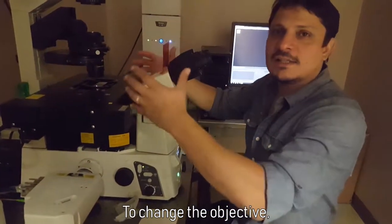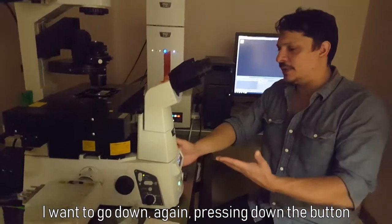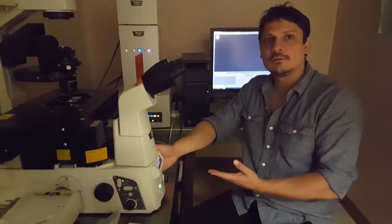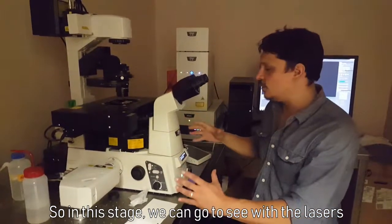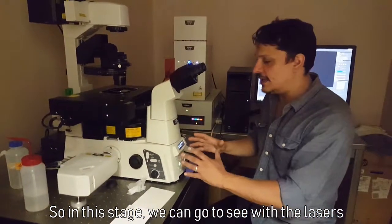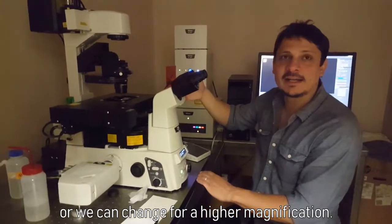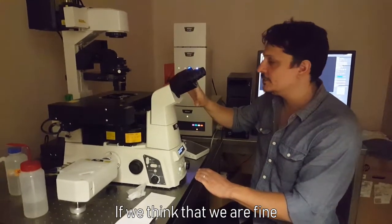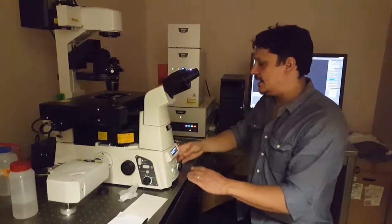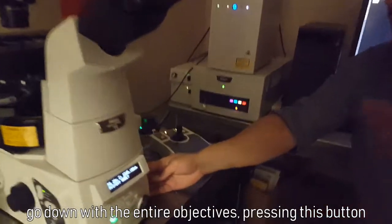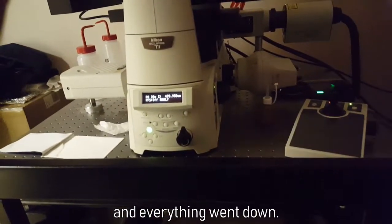To change the objective, I want to go down again, pressing down the button. So in this stage, we can go to see with the lasers and see if we have fluorescence, or we can change for a higher magnification. If we think that we are fine in the place that we want to focus, we can go down with the entire objectives, pressing this button, and everything went down.